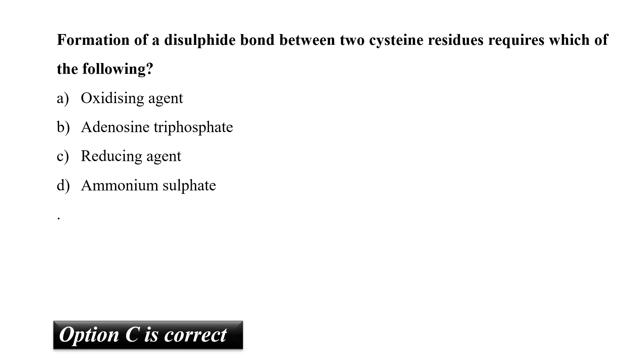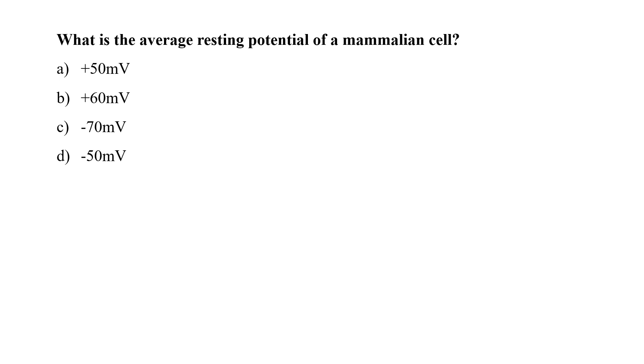What is the average resting potential of a mammalian cell? Plus 50 millivolt, plus 60 millivolt, minus 70 millivolt, or minus 50 millivolt. In most of the mammalian cells, the resting mammalian potential is around minus 0.05 volt or minus 50 millivolt. But this value may vary from minus 20 to minus 100 millivolt depending on the cell to cell. So normal average value of a resting potential of a mammalian cell would be minus 50 millivolt.